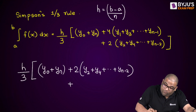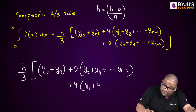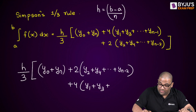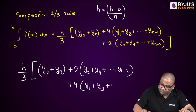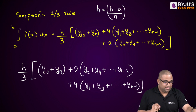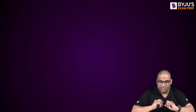Then for the odd-indexed terms, you apply four times: y₁ + y₃ + y₅ + ... + yₙ₋₁. That completes the Simpson's one-third formula. Now you should not face any difficulty applying either rule.